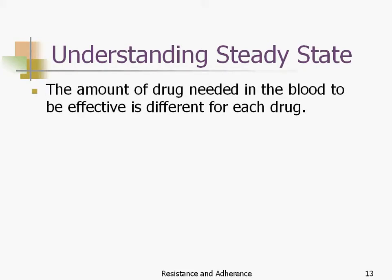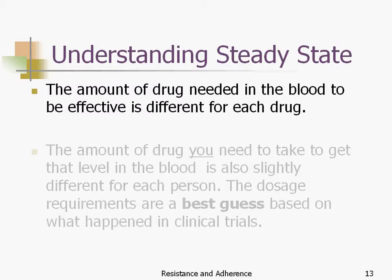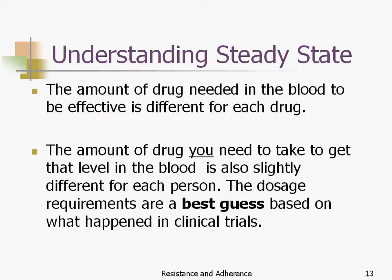The amount of drug needed in the blood to be effective is different for every drug. So there's not a point at which we could say you need to have 25 milligrams or 250 milligrams — it's different for each drug. And the amount of drug you need to take to get the right level in the blood is also slightly different for each person. All drug dosing is a best guess based on what happened in the clinical trials.